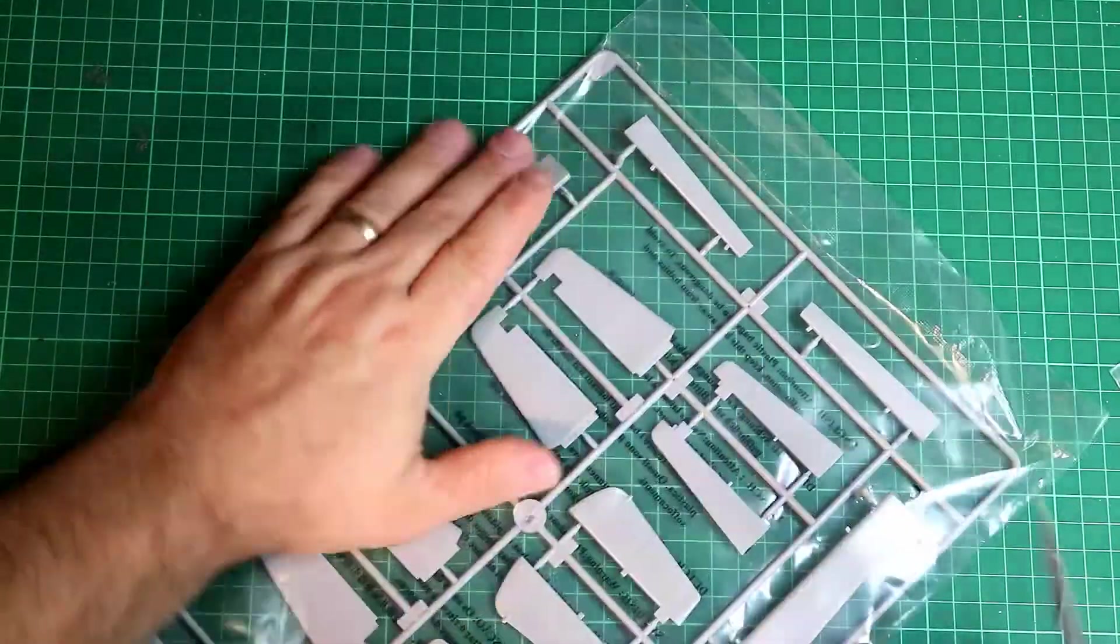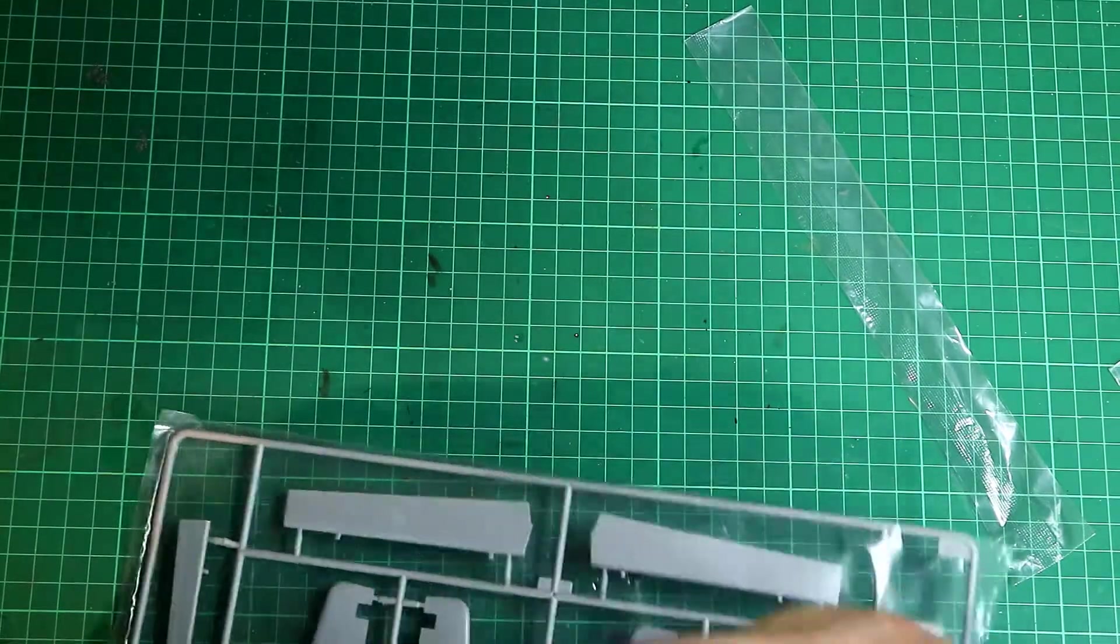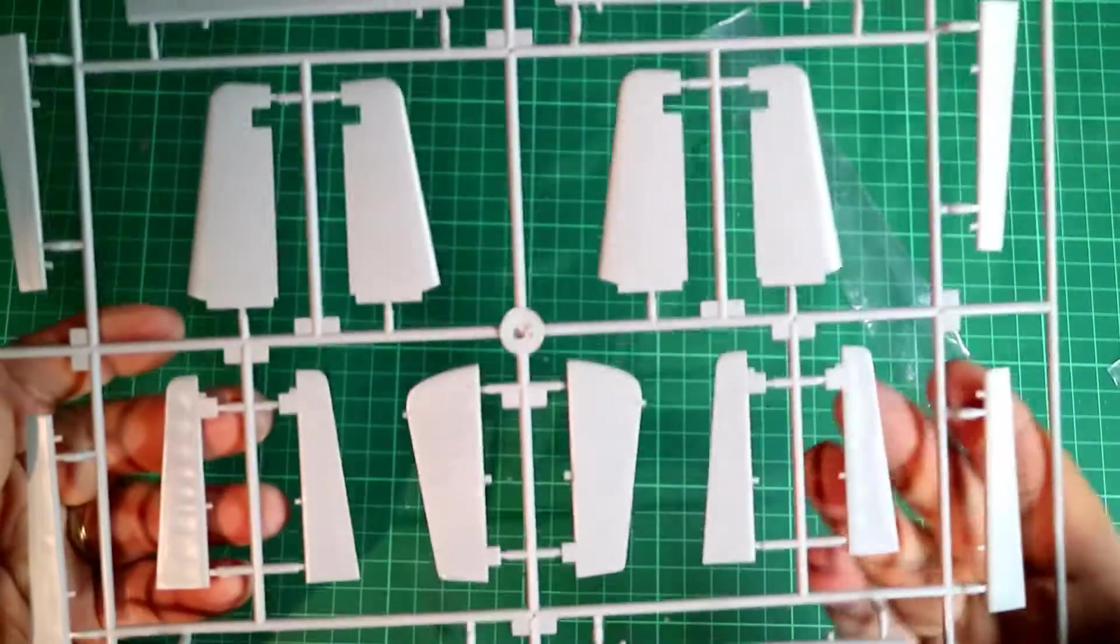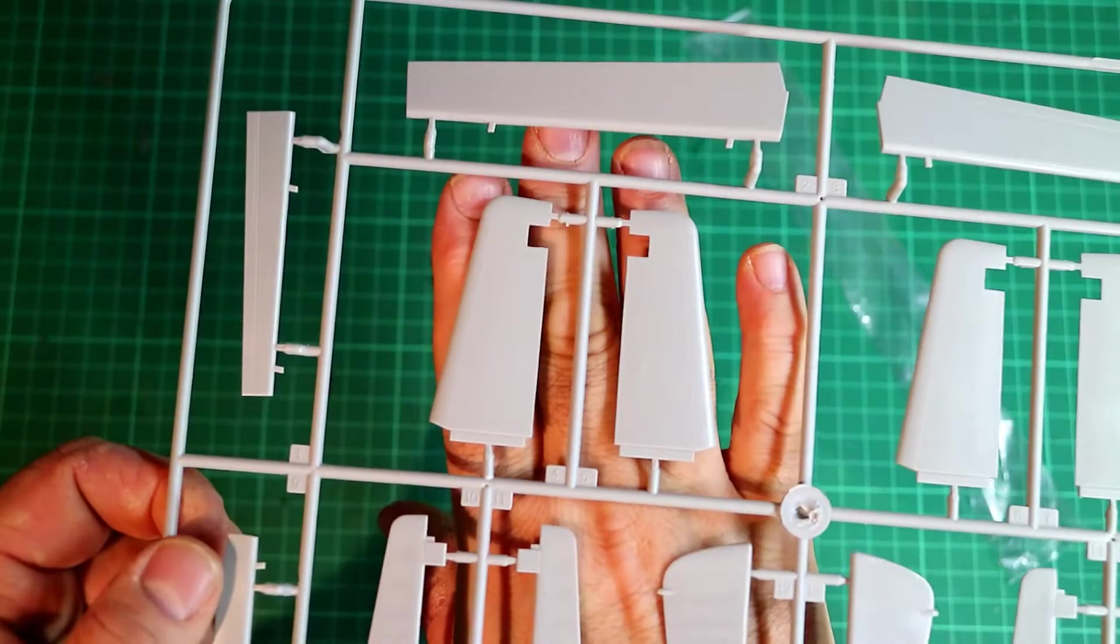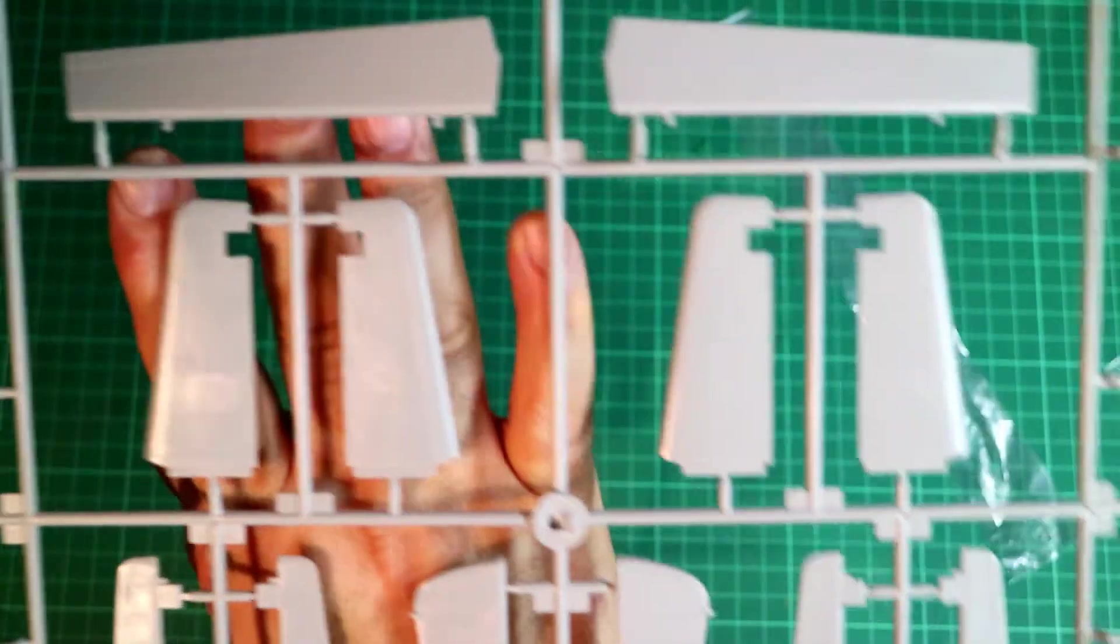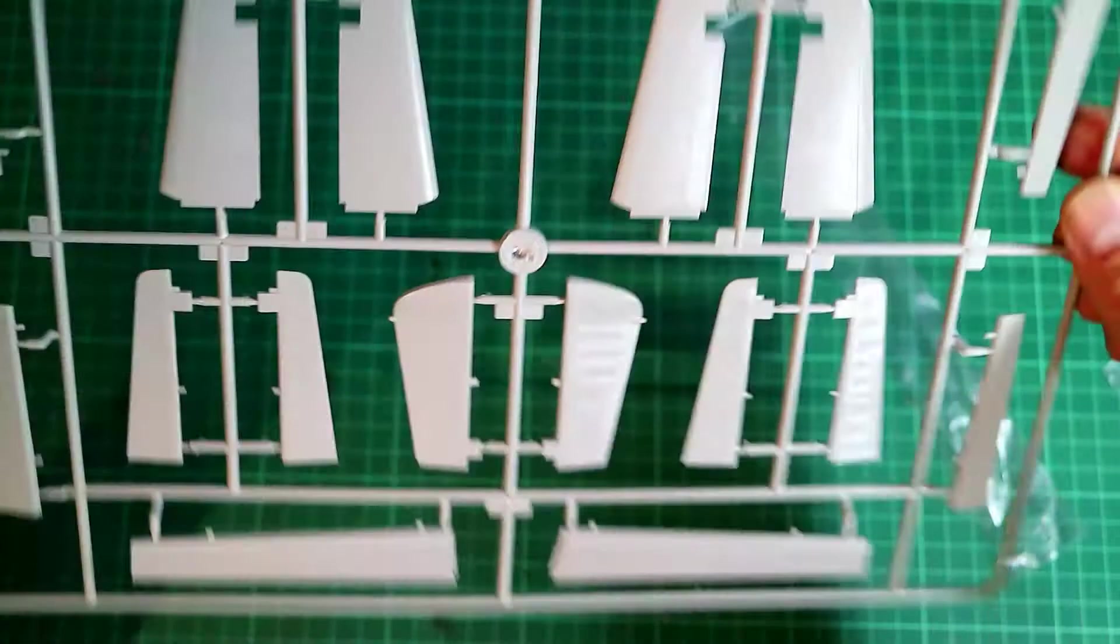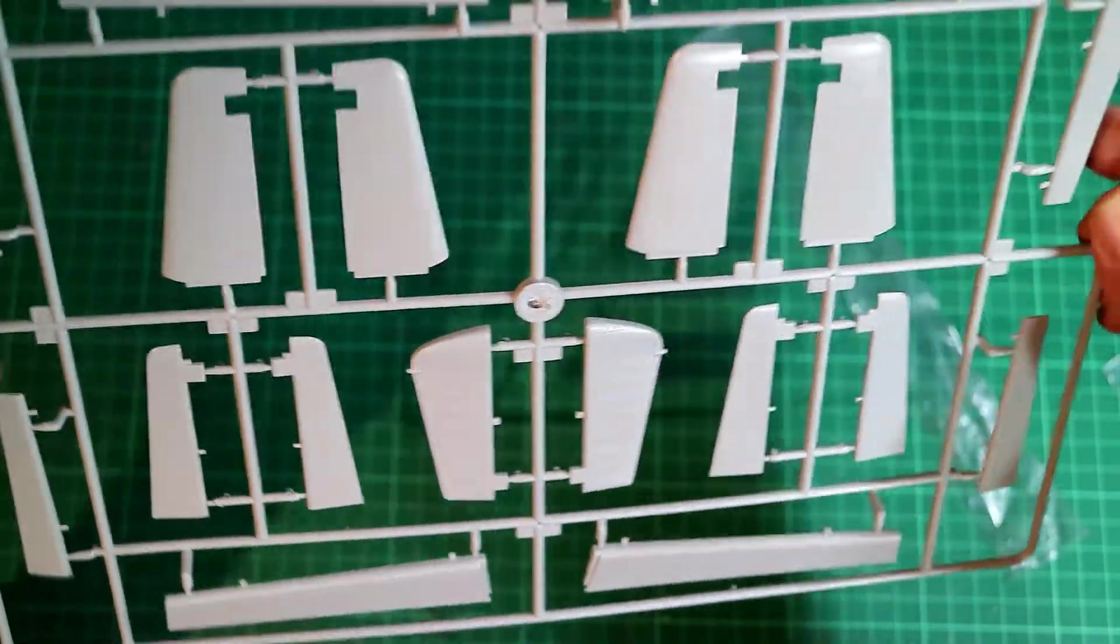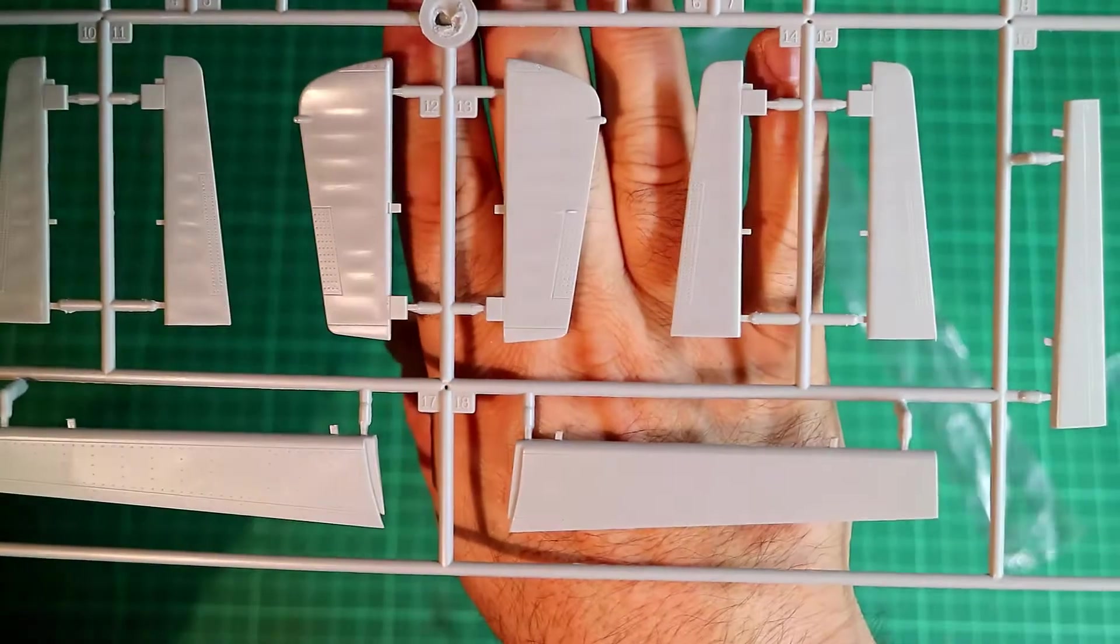The main last main plastic parts are this bit for some flaps and horizontal stabilizers. Let's have a quick look at those. Again, it's a clean sprue. There's nothing really to complain about there. I don't think there's anything that's going to give you any problems. Rivets seem to be a little bit less excessive, but that's nice.